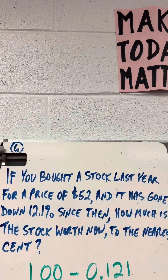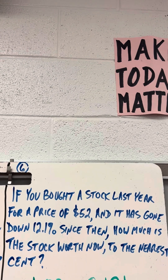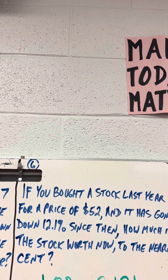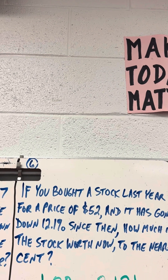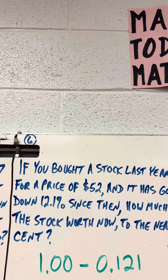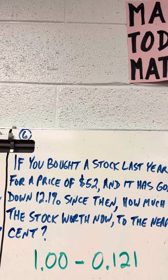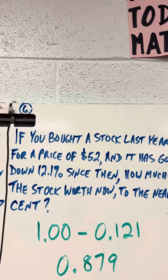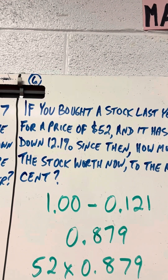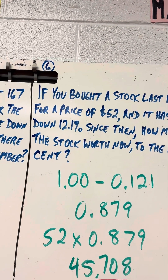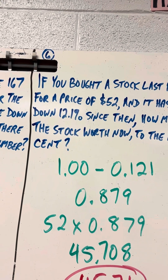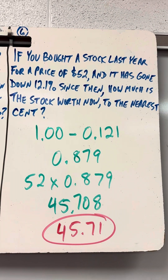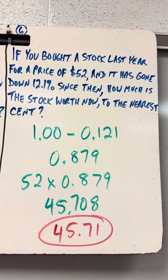If you bought a stock last year for a price of $52 and it's gone down 12.1% since then, how much is the stock worth now to the nearest cent? So you're going to do 1 minus 0.121, which is 0.879. So 52 times 0.879 is 45.708, which rounds to $45.71. You've been watching the Weiss Channel.